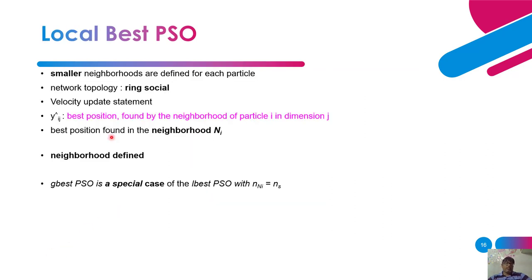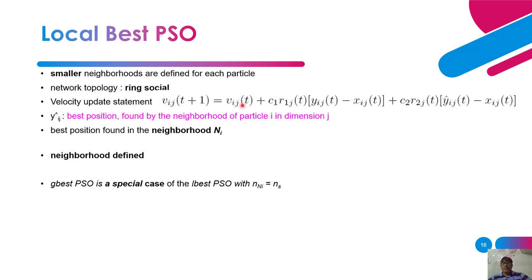Next comes the local best PSO. Smaller neighborhoods are defined for each particle. The network topology used here is a ring social topology.